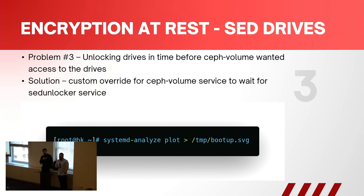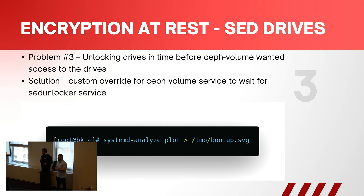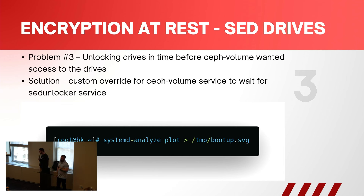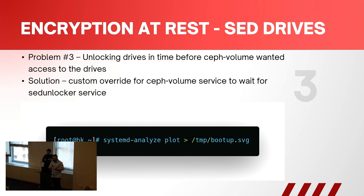For the third challenge — unlocking drives in time before the volume service needed them — everything was going fine until we actually built the cluster. We rebooted a node and the OSDs didn't start because the drives weren't unlocked in time before the volume service wanted them. The solution was a custom override for the volume service to wait for the drive unlocker. Shout out to 'systemd-analyze plot' — really useful tool that gives you a nice SVG timeline so you can see what's going on.